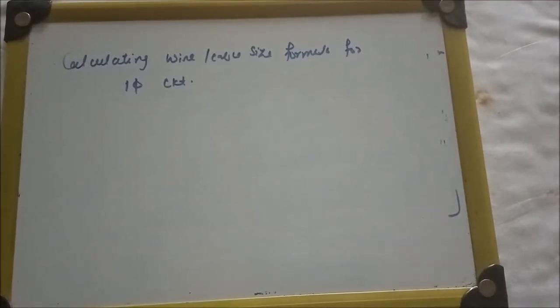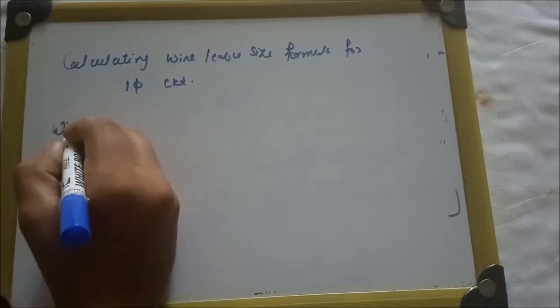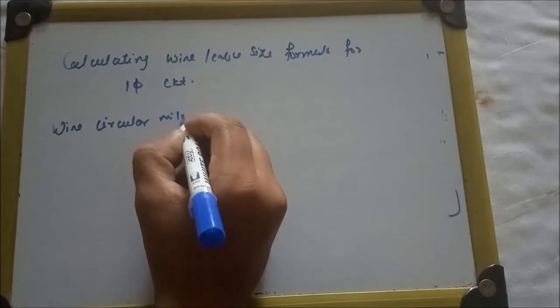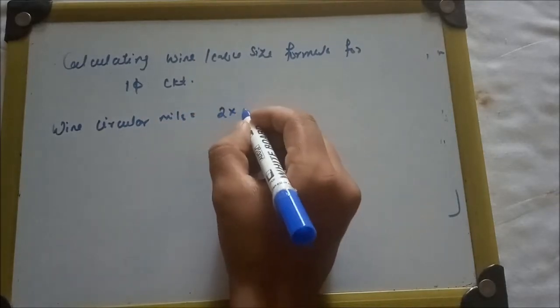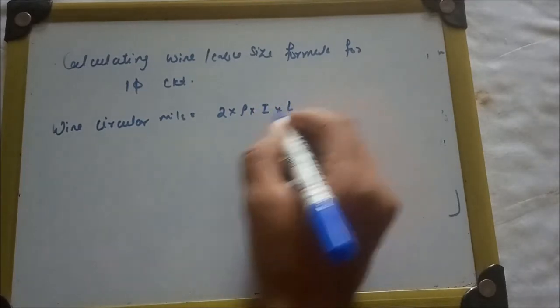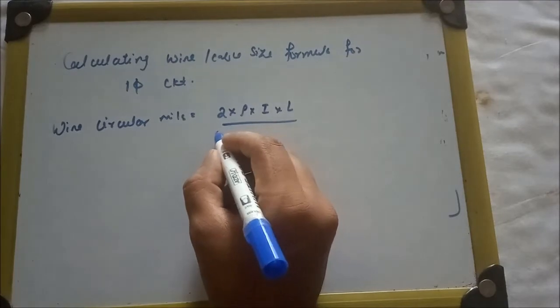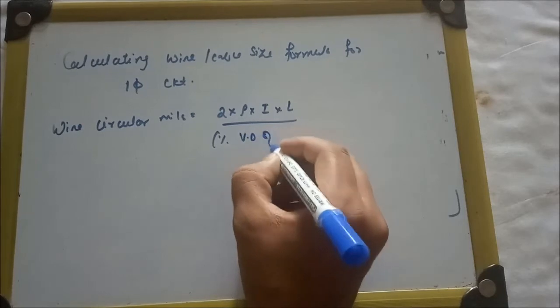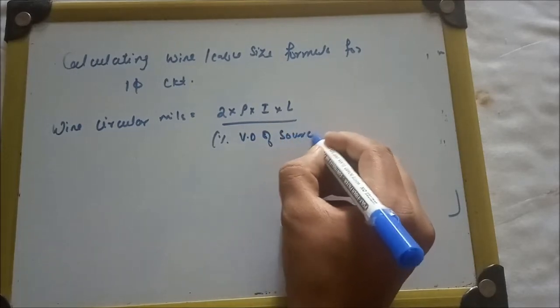Now, what will be the wire or cable size formula for single-phase circuits, which may be copper or aluminum? The formula is given as wire circular mill equals 2 × ρ × I × L divided by percentage voltage drop of source voltage.